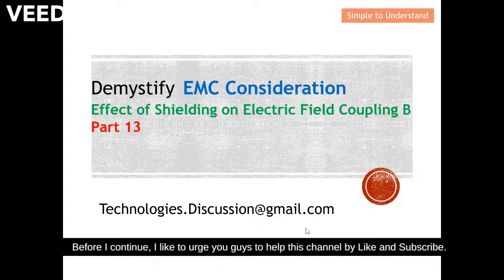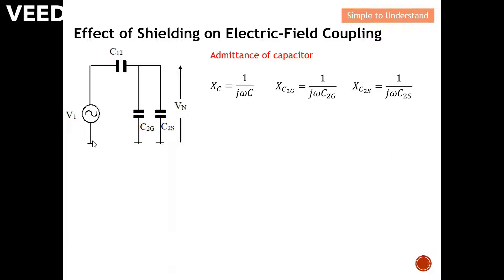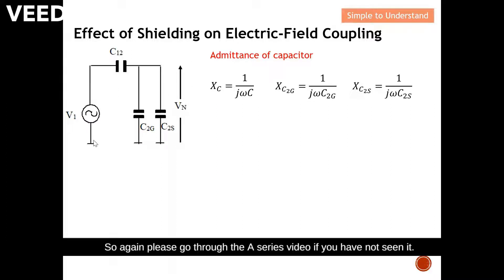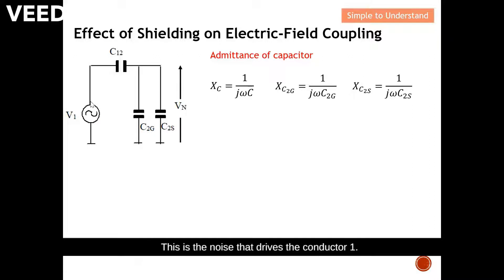Before I continue, I'd like to urge you to help this channel by liking and subscribing. This is the equivalent circuit that we arrived at in the A series video, so again please go through the A series if you have not seen it. In the A series we actually derive how we arrive at this equivalent circuit. This is the noise that drives conductor one, and this is the noise that couples from conductor one to conductor two.